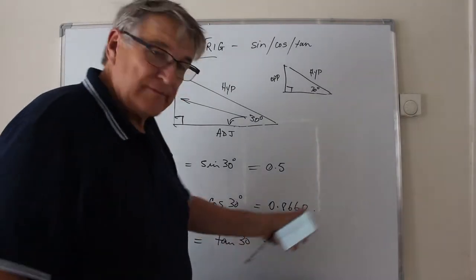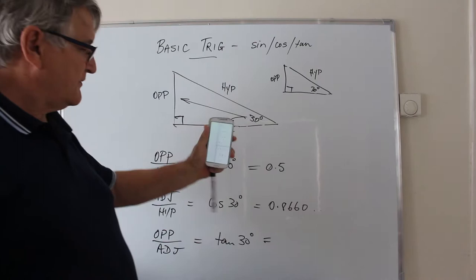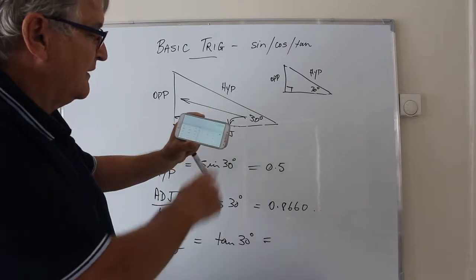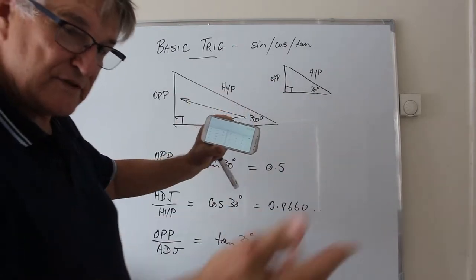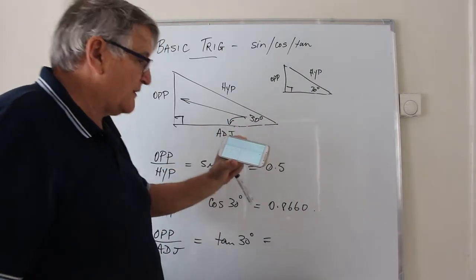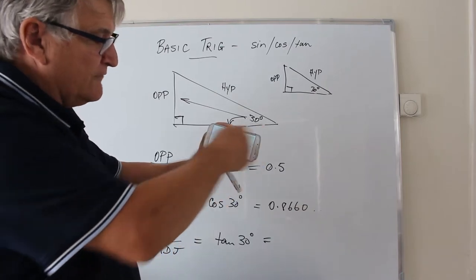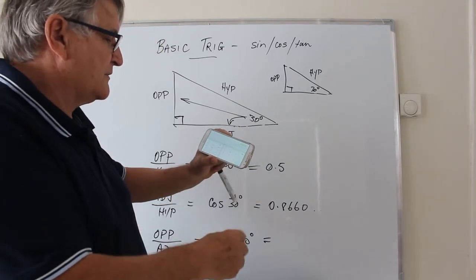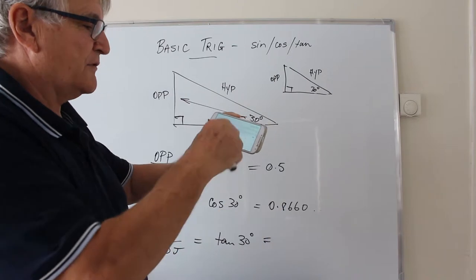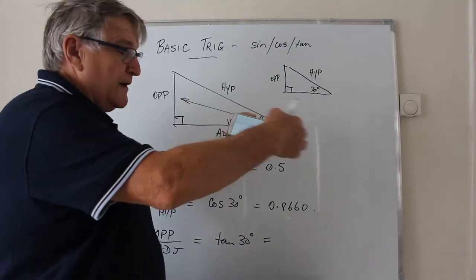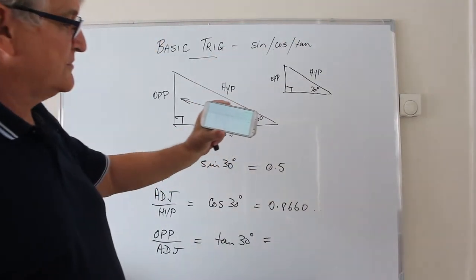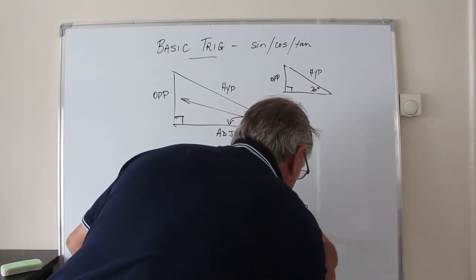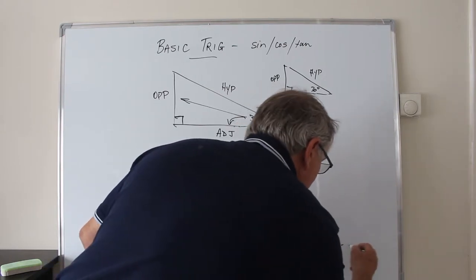To find the tan of 30 degrees, use the scientific calculator on your phone. The calculator gives us the bracket for tan just as it does for square root. You don't have to close the bracket unless you're multiplying the result by another value. The tan of 30 degrees is 0.5773502692 — we can round this to 0.5774 or 0.577.